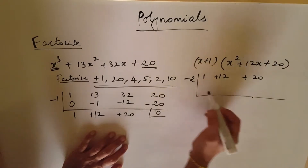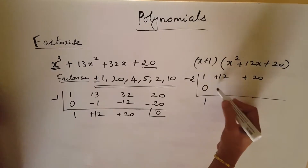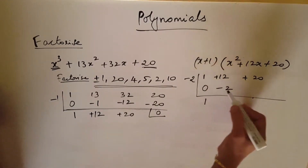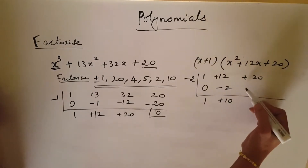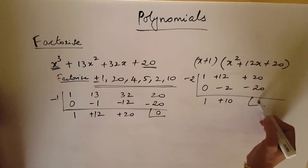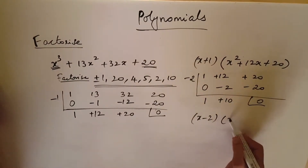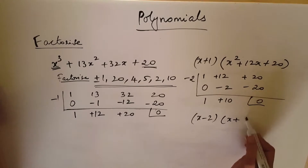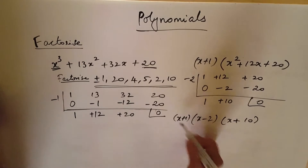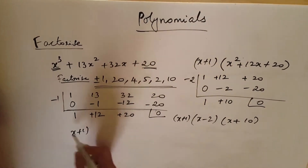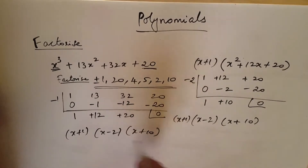Trying minus 2: 1, minus 2 gives minus 2, plus 10, minus 2 into plus 10 gives minus 20, remainder is 0. So the factors are x plus 1, x minus 2, x plus 10. This is the answer.